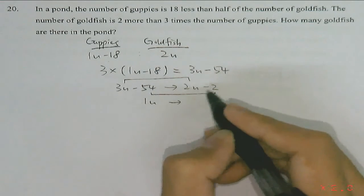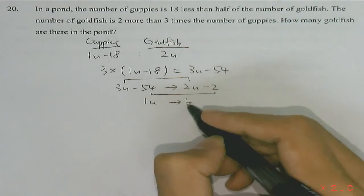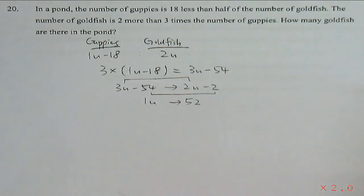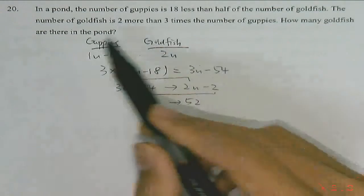And the difference between negative 54 and negative 2 is going to be 52. The question asks, how many goldfish are there in the pond?